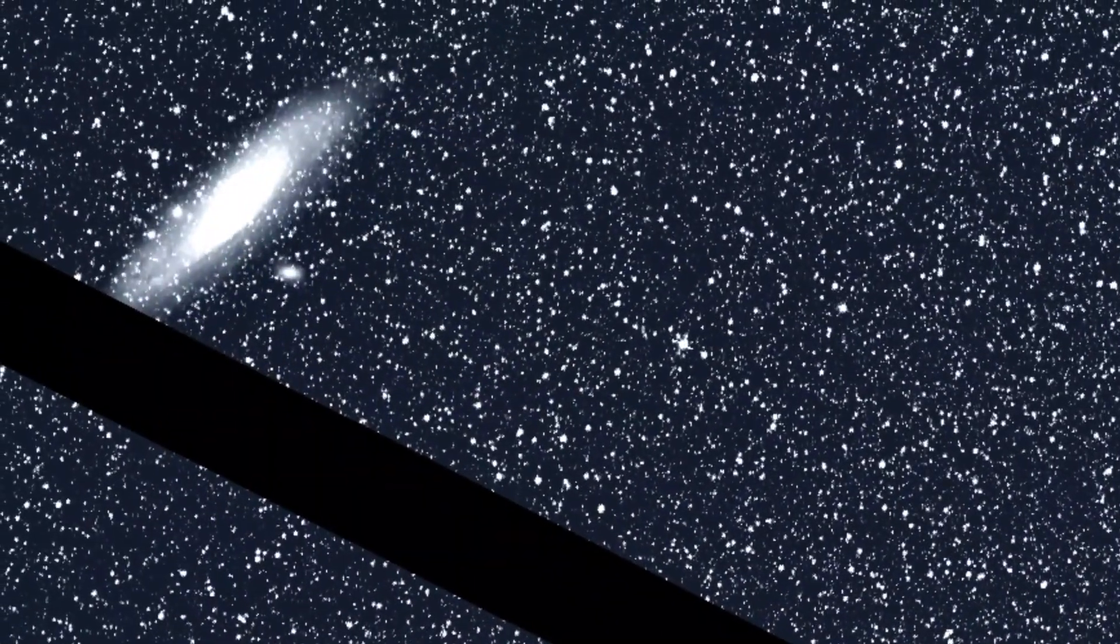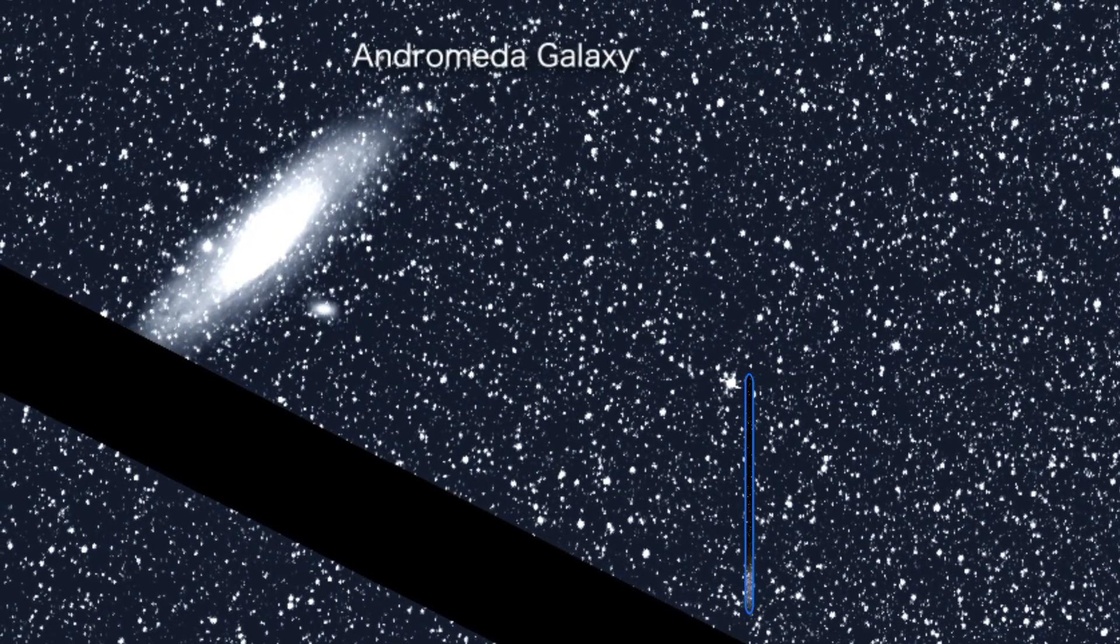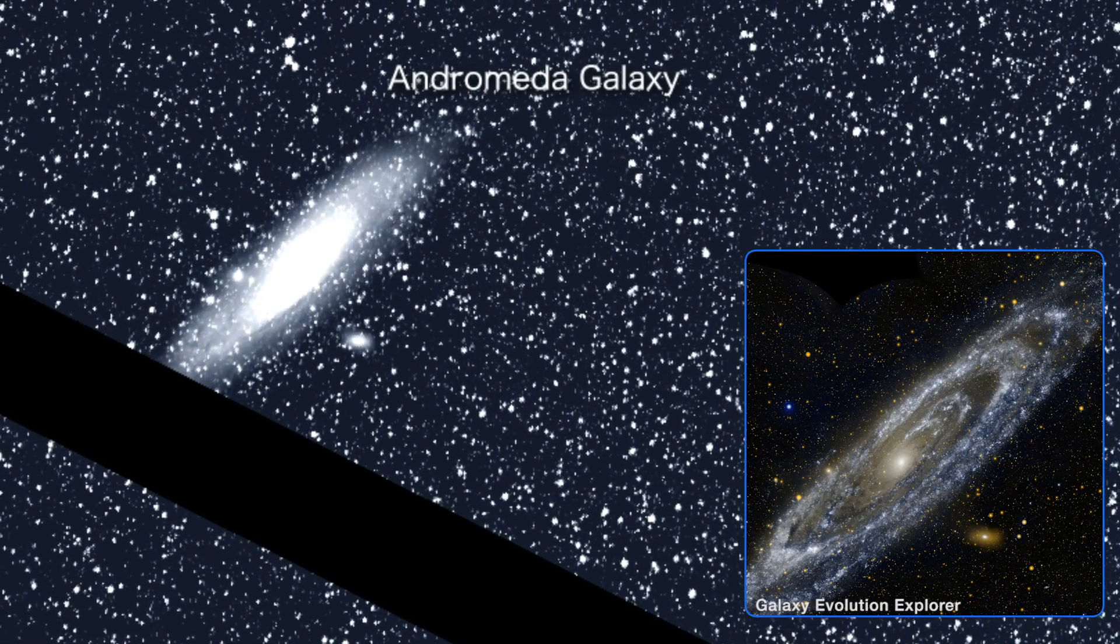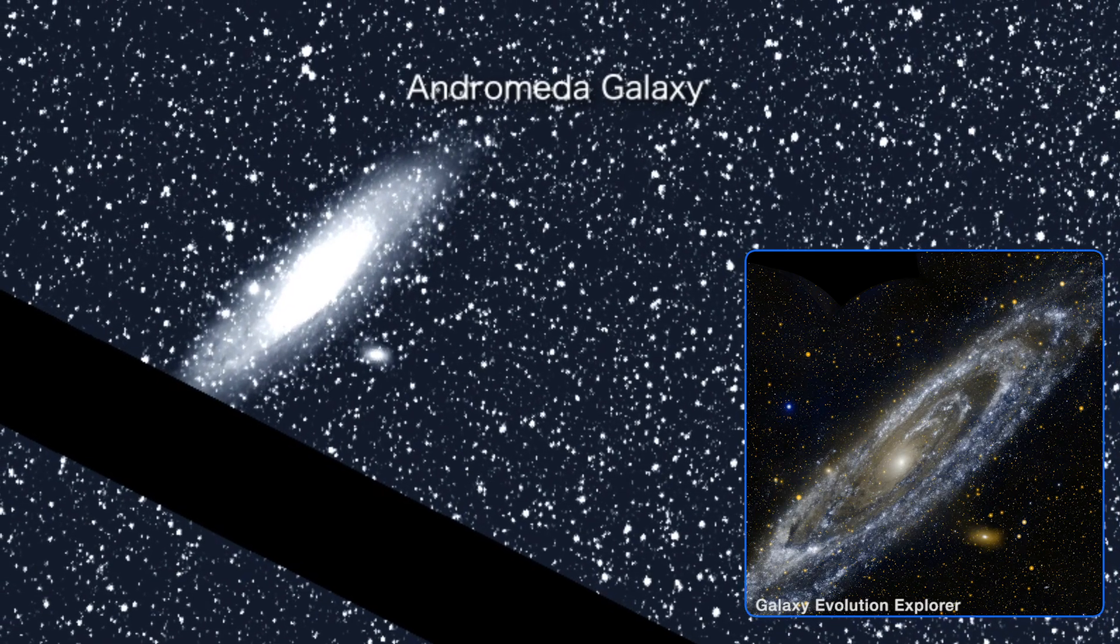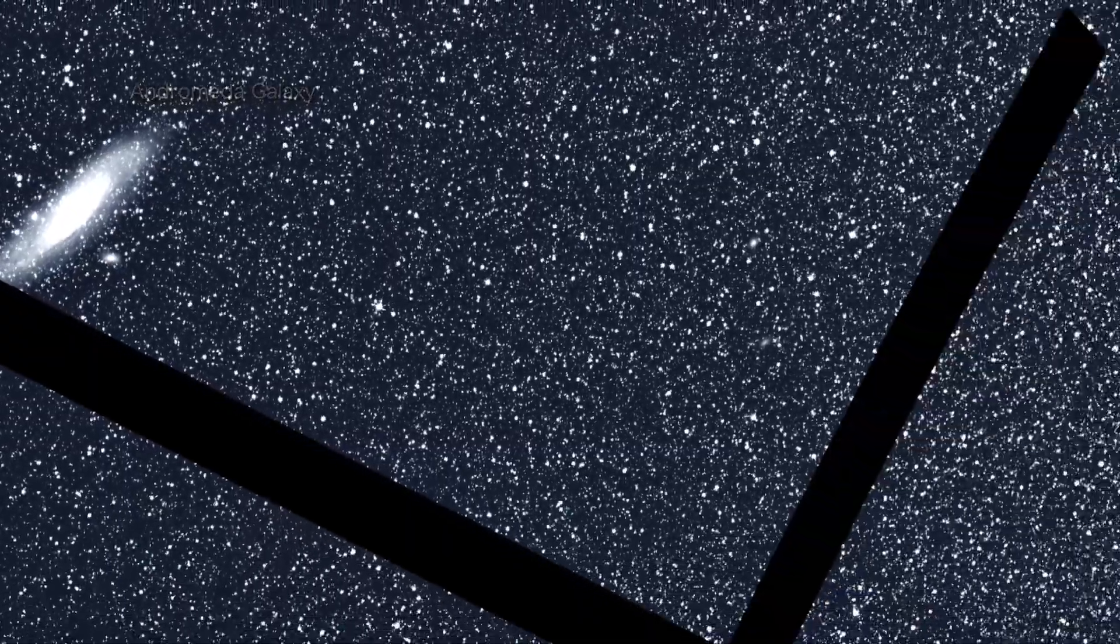Peering beyond the confines of our own galaxy, TESS imaged the closest neighboring spiral galaxy. Visible by eye as a hazy patch, the Andromeda galaxy, located 2.5 million light-years away, is a city of stars as vast as our own Milky Way.